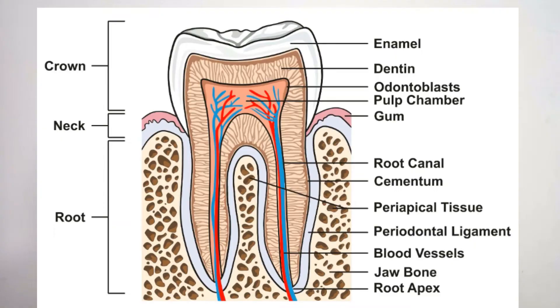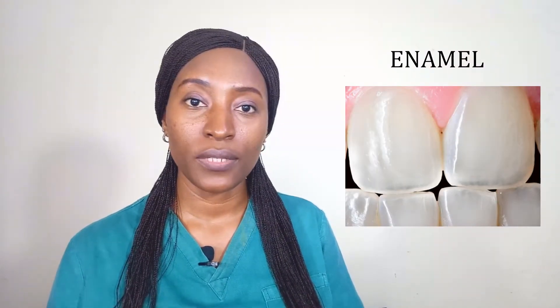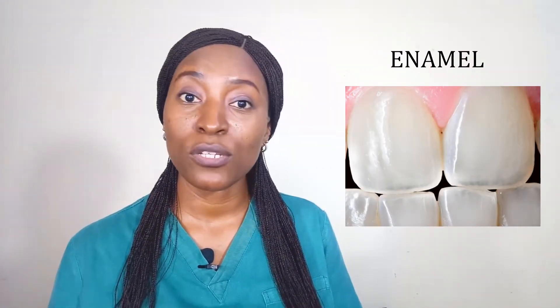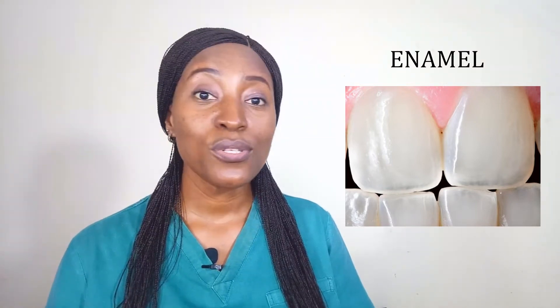The human tooth is divided into two parts: the crown and the root portion. The crown portion is made up of the enamel, the dentine, and the pulp, while the root portion is made up of the cementum, the dentine, and the pulp. The enamel is the outermost layer of the crown. It is translucent and it is made to protect the tooth crown. It is also the hardest substance of the human body.